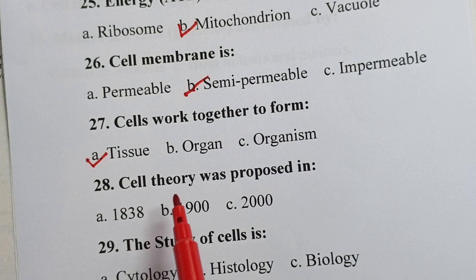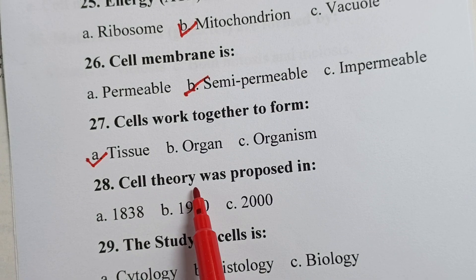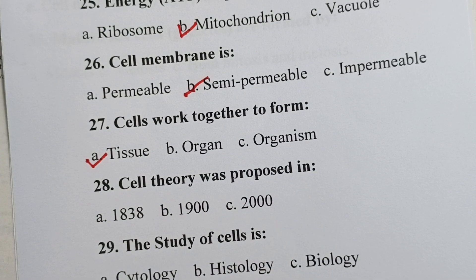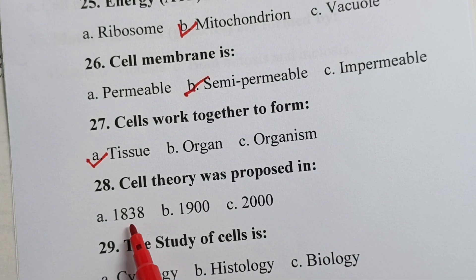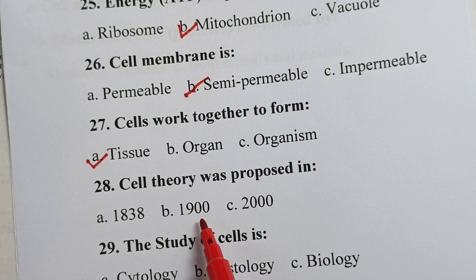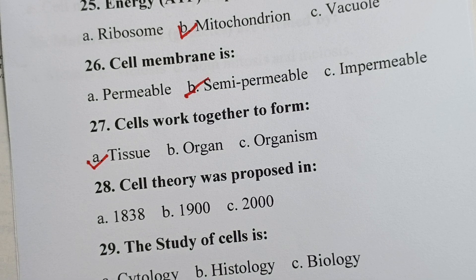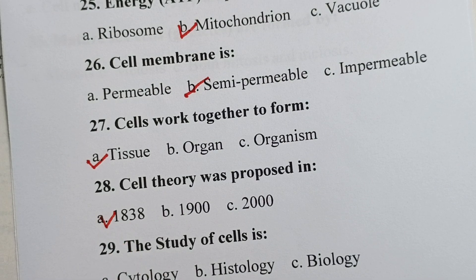Question twenty-eight: cell theory was proposed in — is it 1838, 1900, or 2000? Your correct answer is 1838.